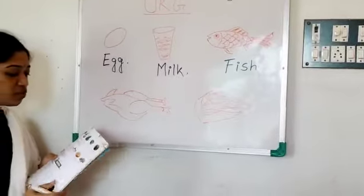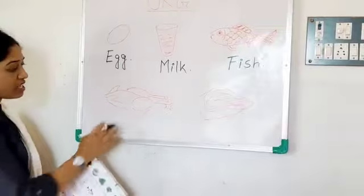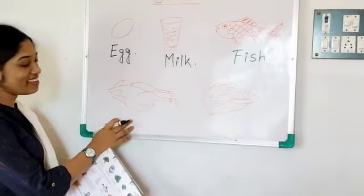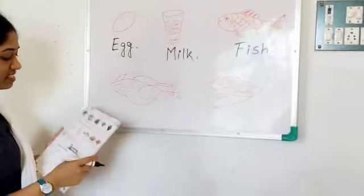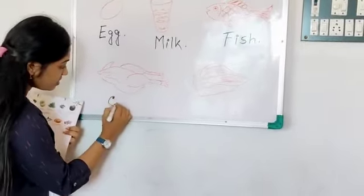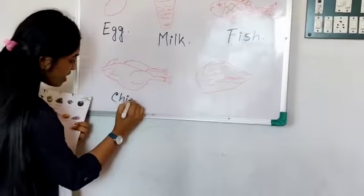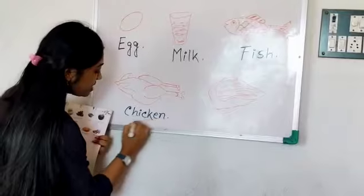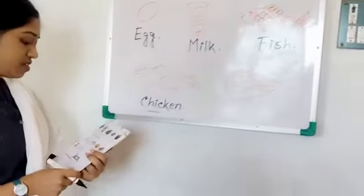Now, come to the next food item. What is this? Can you tell me? What is this? This is chicken. Yes. Chicken spelling? C-H-I-C-K-E-N. That is chicken. Okay.